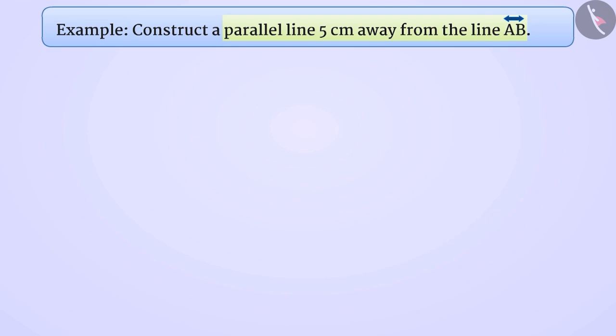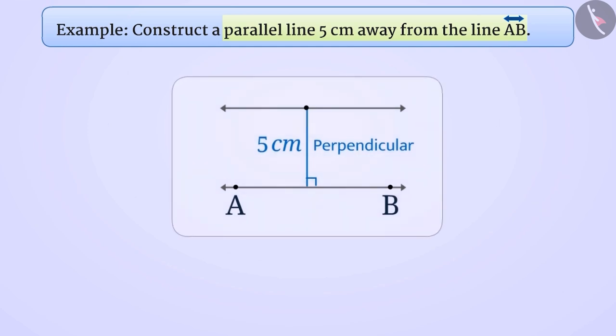First, draw a perpendicular above AB. Draw a line parallel to AB passing through a point placed at 5 cm on the perpendicular. A rough sketch helps us to determine the procedure in construction.